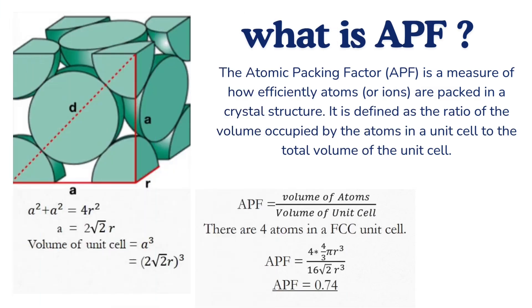What is APF? The atomic packing factor, or APF, is a measure of how efficiently atoms or ions are packed in a crystal structure. It is defined as the ratio of the volume occupied by the atoms in a unit cell to the total volume of the unit cell. The formula is volume of atoms divided by volume of unit cell. There are 4 atoms in an FCC unit cell, and substituting into the formula, the APF is 0.74, or 74%.